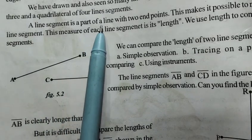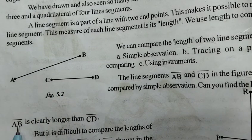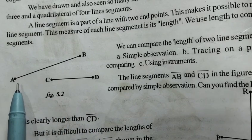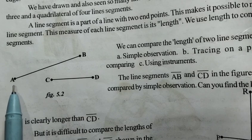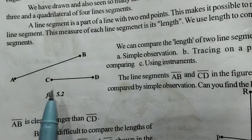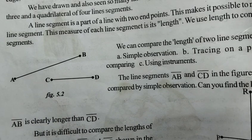A line segment is a part of a line with two endpoints. For example, line segment AB and line segment CD. The difference between a line and a line segment: a line has no endpoints and extends to infinity, while a line segment has two endpoints — such as A and B, or C and D — and has a finite distance.